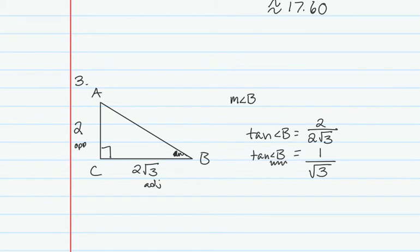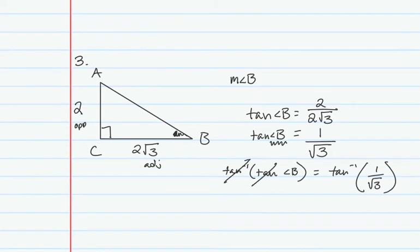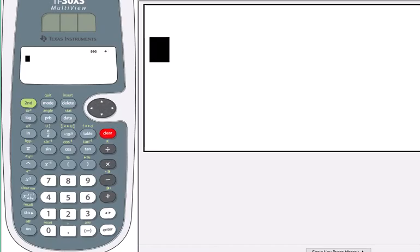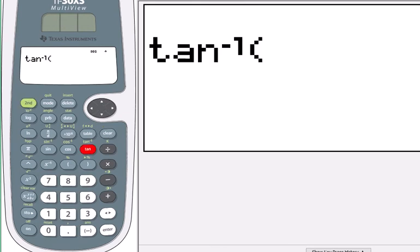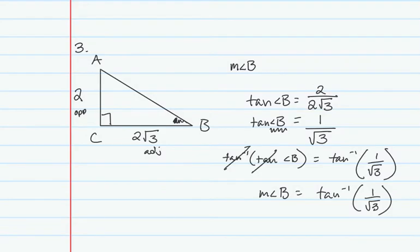In order to solve for B, I need to take the tangent inverse of both sides to get rid of the tangent. The tangent inverse and tangent are inverse operations and undo each other, leaving us with the measure of angle B equal to the tangent inverse of 1 over radical 3. Typing second tangent of 1 divided by the square root of 3 into the calculator gives 30 degrees.